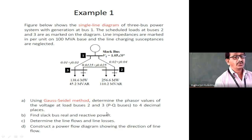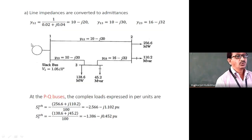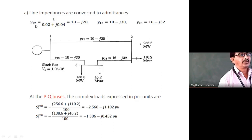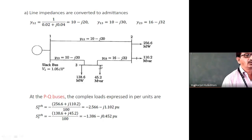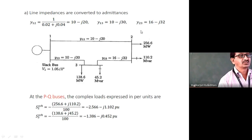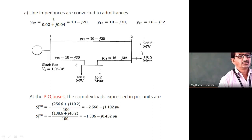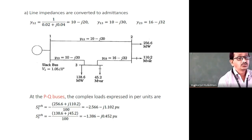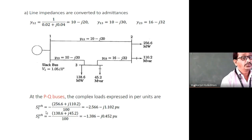Since admittance is needed but impedance is given, we convert by taking the inverse of each impedance value: elements between buses 1-2, 1-3, and 2-3. At the load side, bus 2 megawatt and MVAR are divided by 100 to get per unit active and reactive power. The scheduled complex power at bus 2 is then computed accordingly.